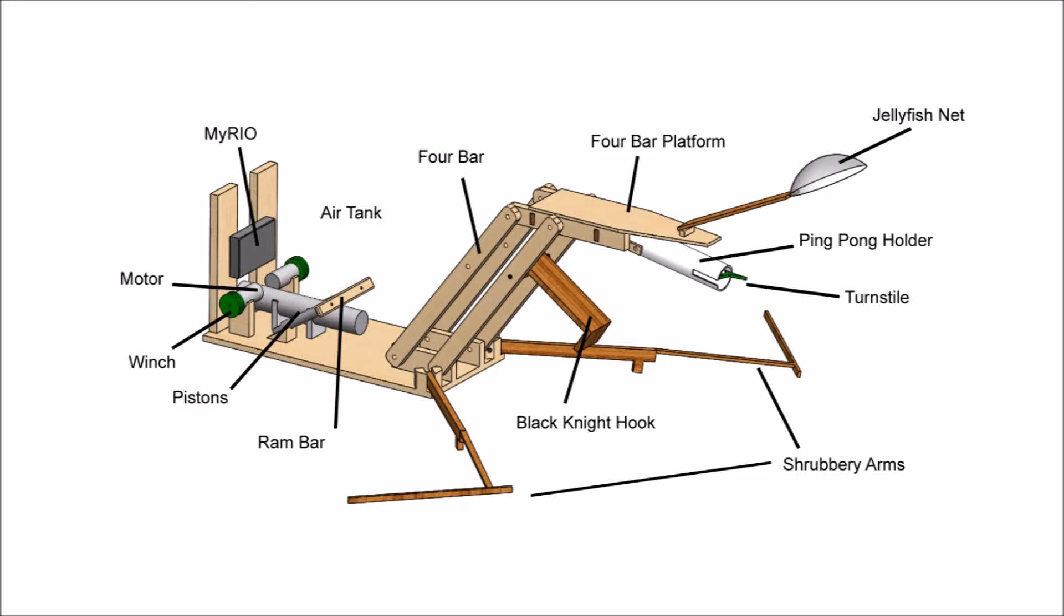The shrubbery arms, located at the two front quarters of the base, begin the match folded up and are thrown out from the force of the 4-bar. These land on the opposite side of the tennis balls and pull them into the home zone.